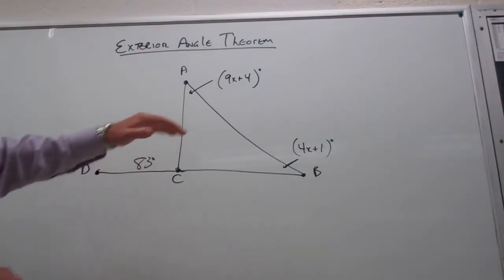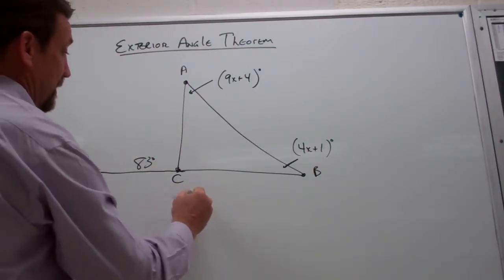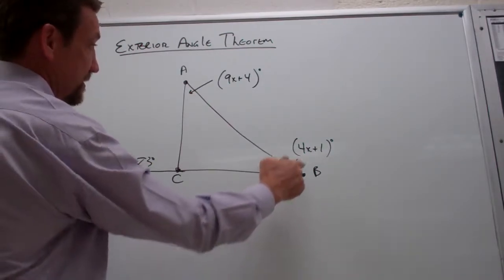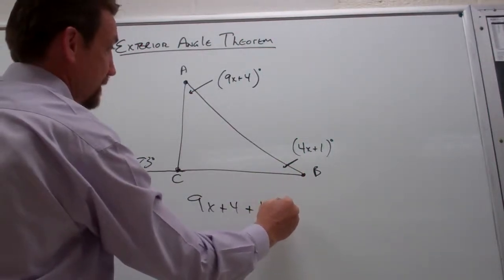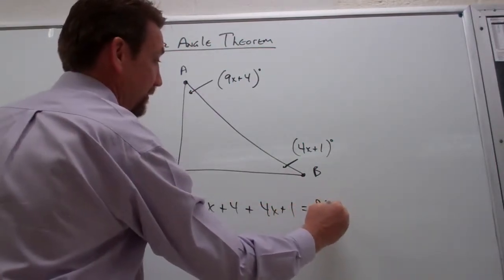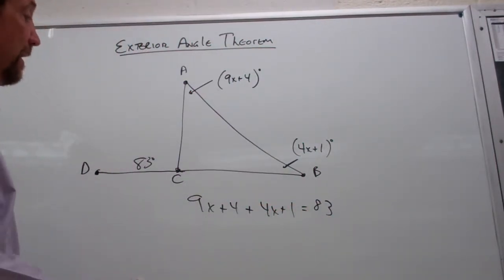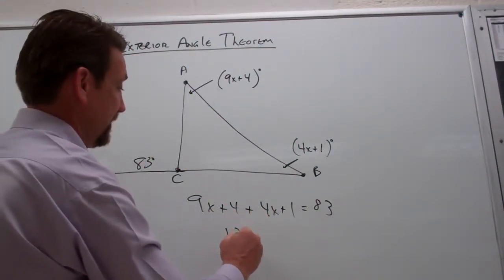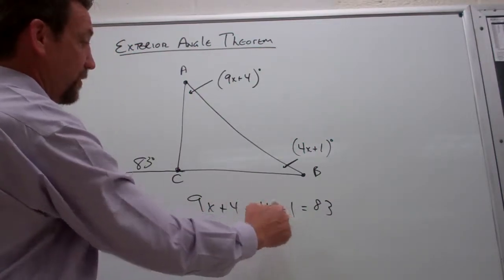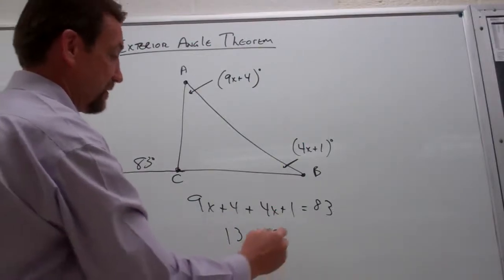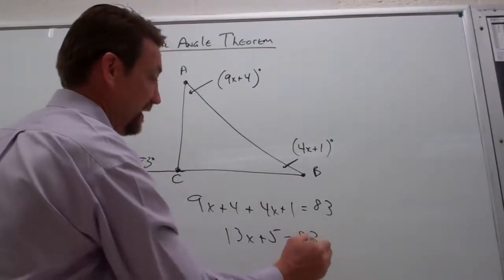So we can then say that 9x plus 4 plus 4x plus 1 has to equal 83 degrees. Now we can solve for x by combining like terms. 9x and 4x is 13x. Positive 4 and a positive 1 gives me a positive 5. So we got 13x plus 5 equals 83.